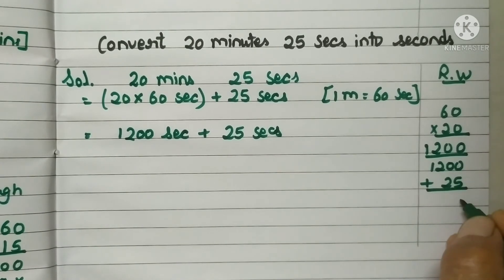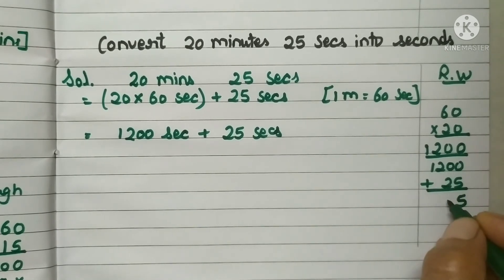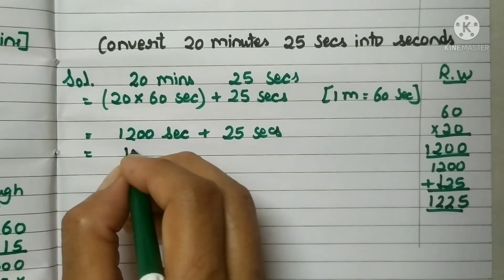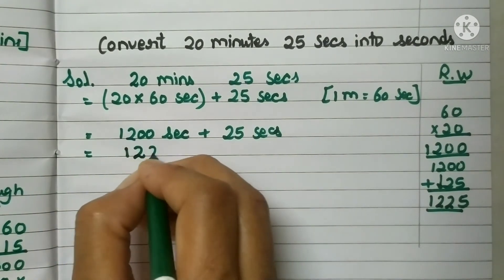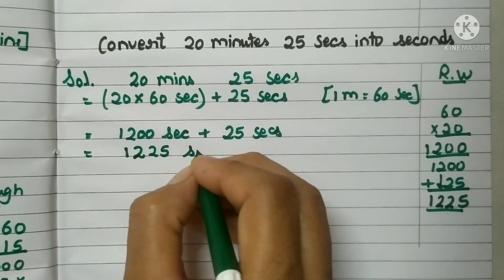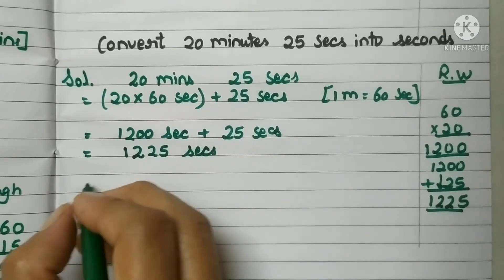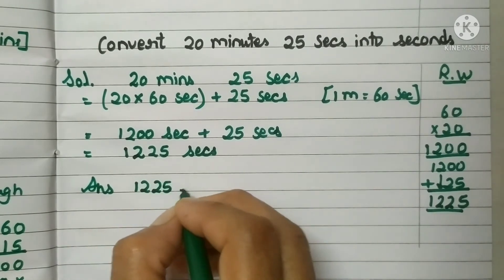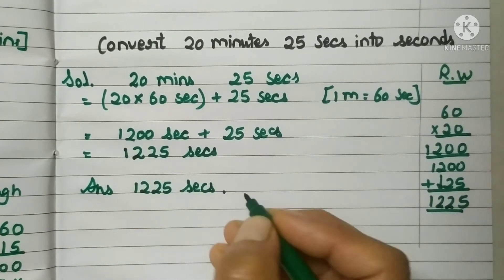0 plus 5, don't forget to put in a proper order. 0 plus 5 is 5, 0 plus 2 is 2, just 2, there is no number, so direct 2 and direct 1. So we got the answer as 1225 seconds. Write down the ANS, answer, 1225 seconds.